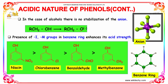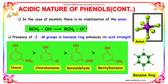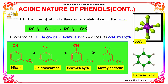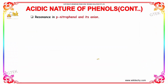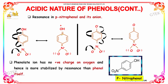The presence of electron-withdrawing groups in the benzene ring enhances its acidic strength. The order of reactivity is: nitrobenzene > chlorobenzene > benzaldehyde > methylbenzene.